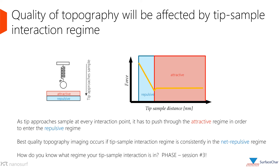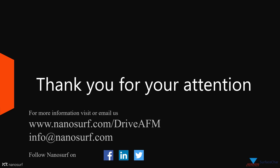The quality of the image depends on the tip-sample interaction regime. As the tip approaches the sample at every interaction point, it has to push through the attractive regime in order to enter the repulsive regime, as shown in the force curve. Best topography imaging occurs when the tip-sample interaction is consistently in the net repulsive regime. Making sure that the tip is in the regime of your choice will be discussed in detail in session 3. Thank you all for your attention, and we are now open for a short Q&A session.